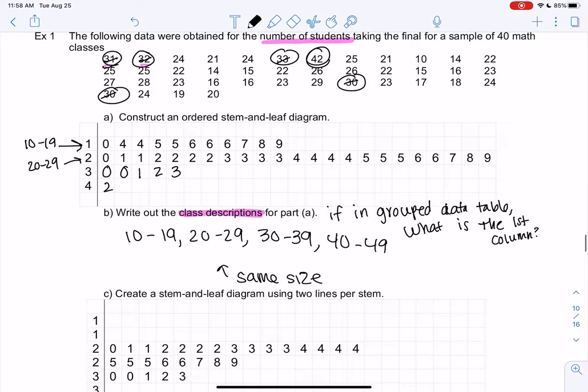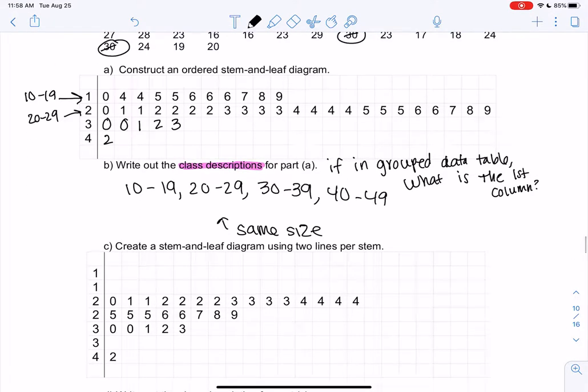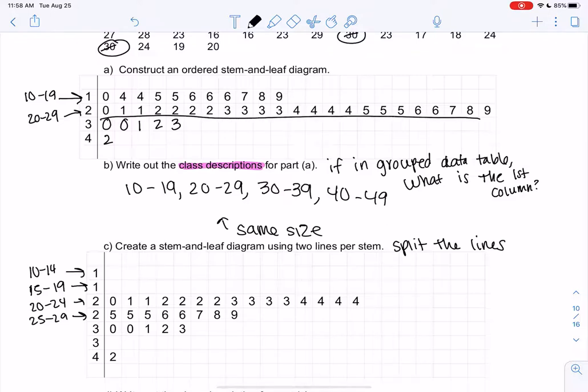So what we like to do sometimes is we like to split the lines to spread it out a little. So rather than doing 10 through 19, we could do 10 through 14 and then 15 through 19, cut off at 5 because that's halfway. 20 through 24 and then 25 through 29. So you'll see 1 show up twice, you'll see 2 show up twice and so on. Just so the data's, this line is really long, so someone might want to shorten it a little.